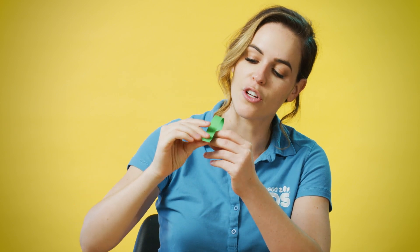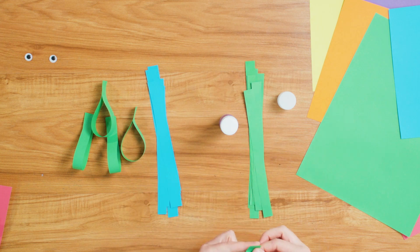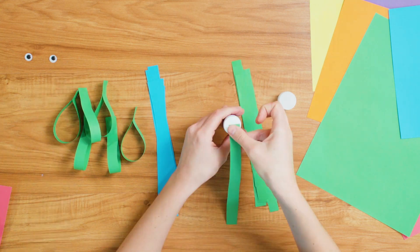Now the next step is to grab each strip, put a bit of glue on the end, and curl it onto itself. These are our peacock feathers, so you're going to create some blue ones and some green ones, and then we'll start to arrange them.